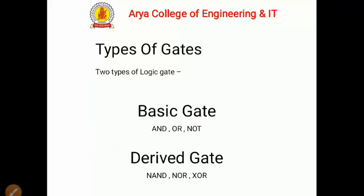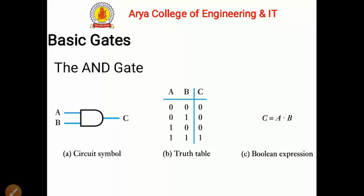We have two types of logic gates: basic logic gates and derived logic gates. The basic logic gates are AND, OR, and NOT. We can derive more logic gates by using these basic logic gates — that is, NAND gate, NOR gate, and XOR gate. These are called derived gates because they are made from basic gates.